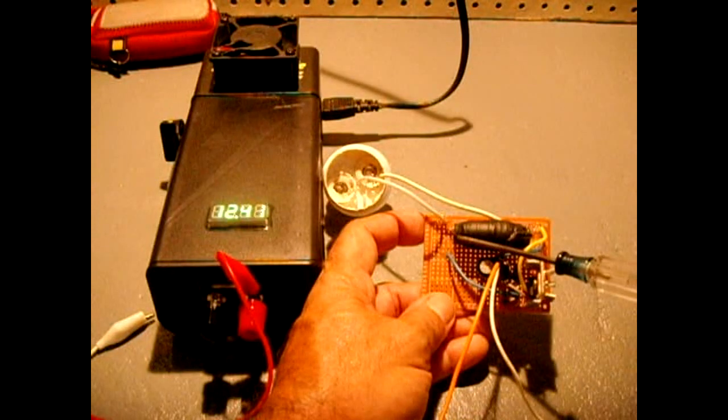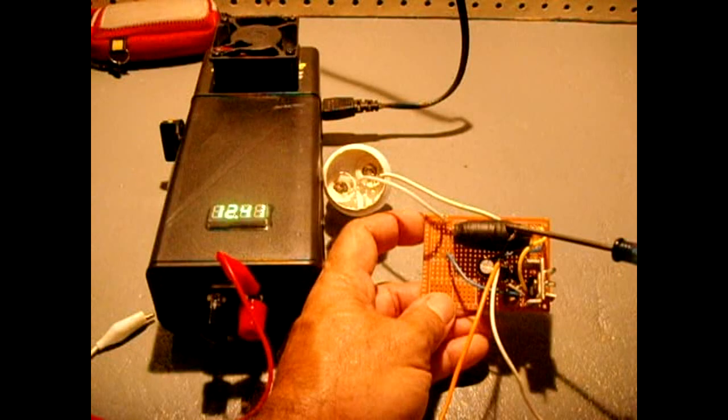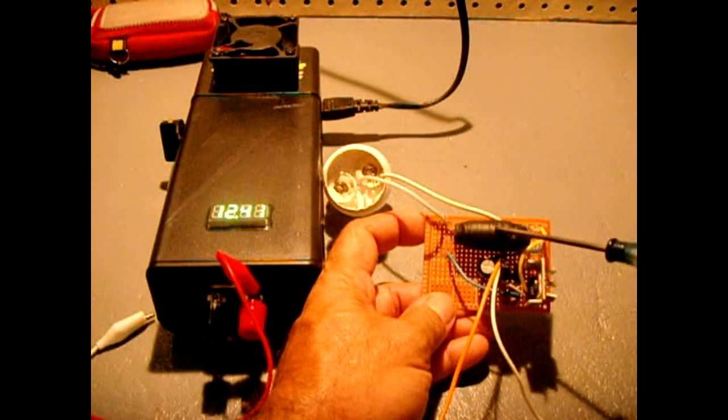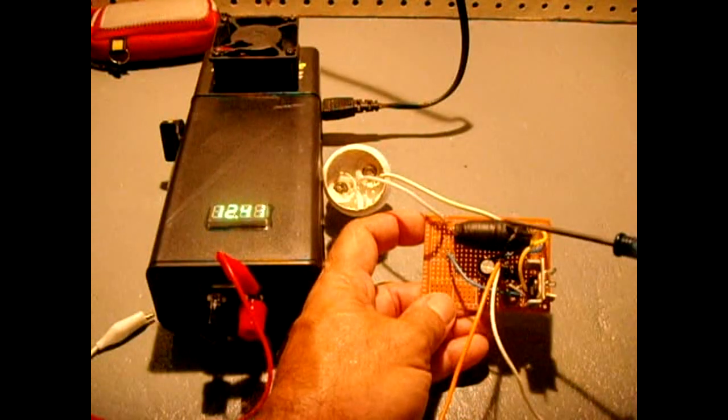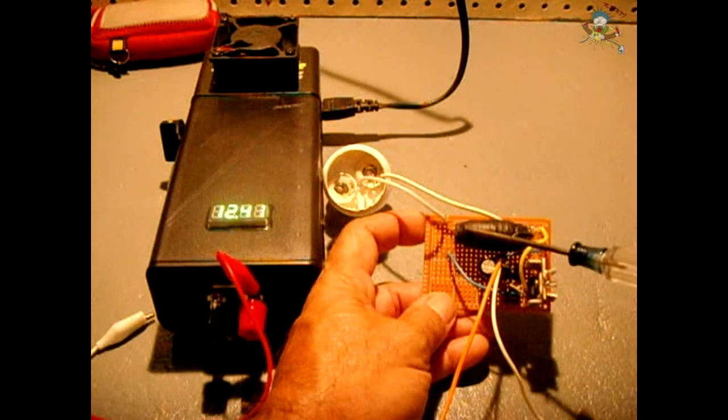Wind it nice and neat and nice and tight. Start at one end, go all the way to this spot. Once you get to the spot here, cover that entire 30 gauge high voltage winding with some tape. And then you're going to wind back.